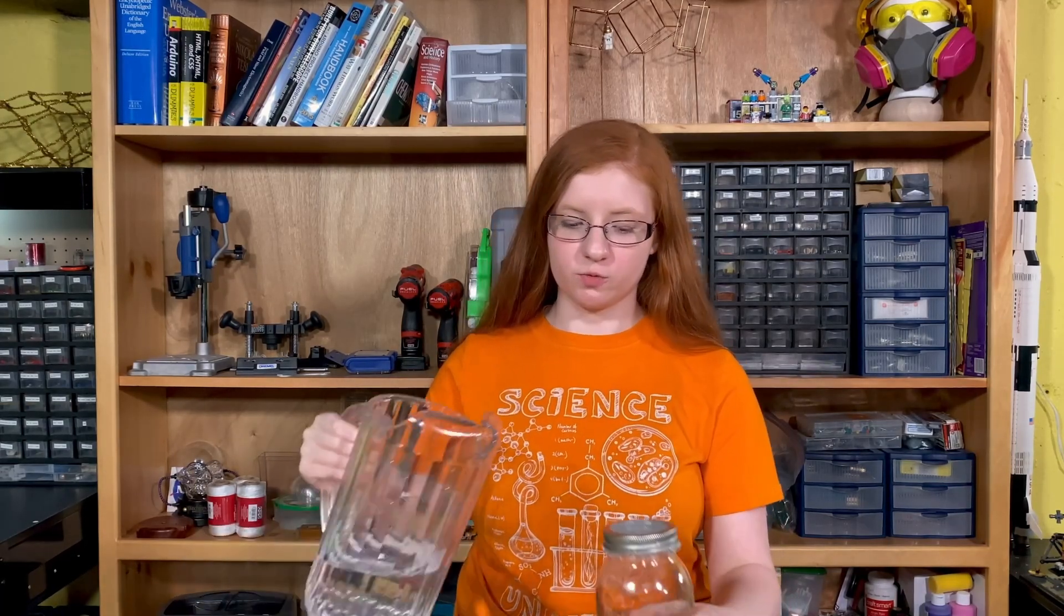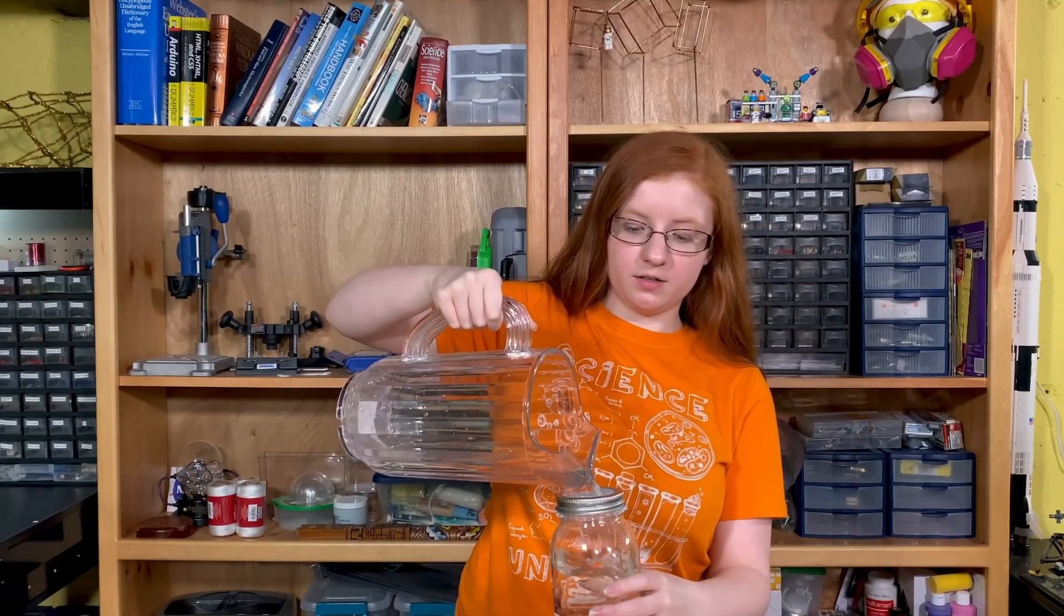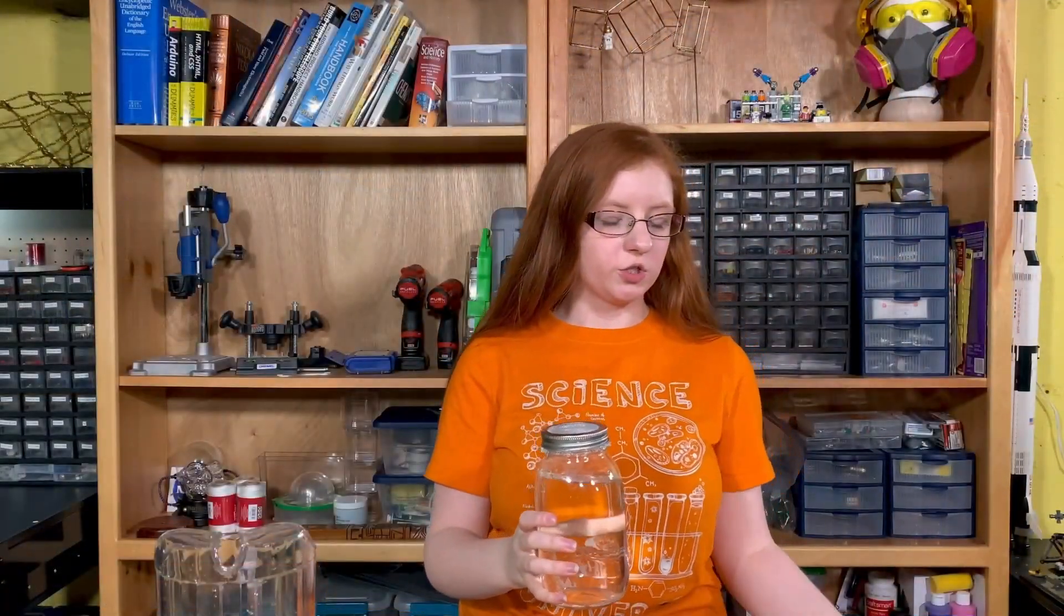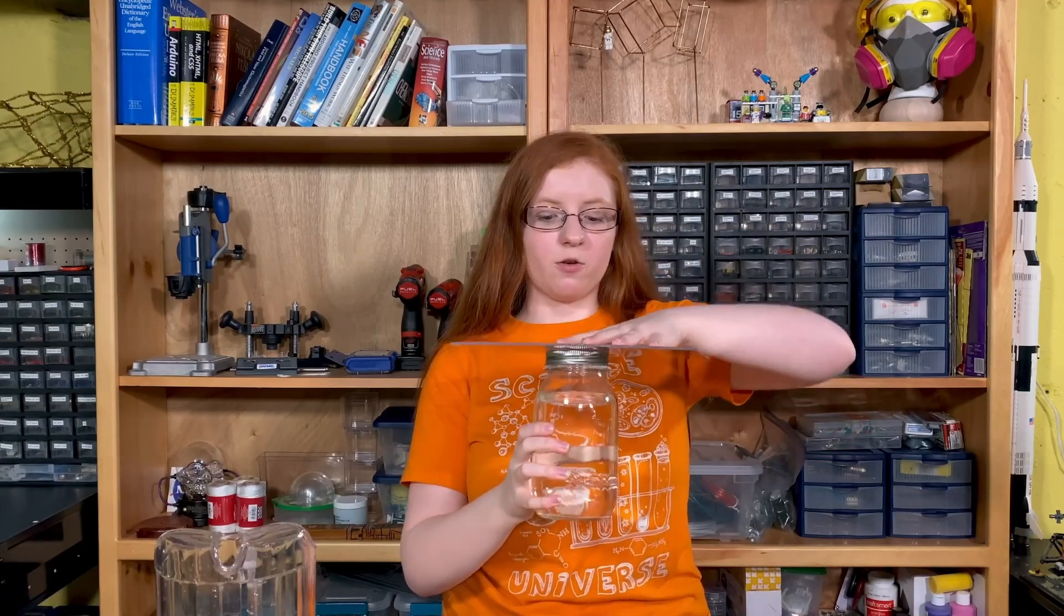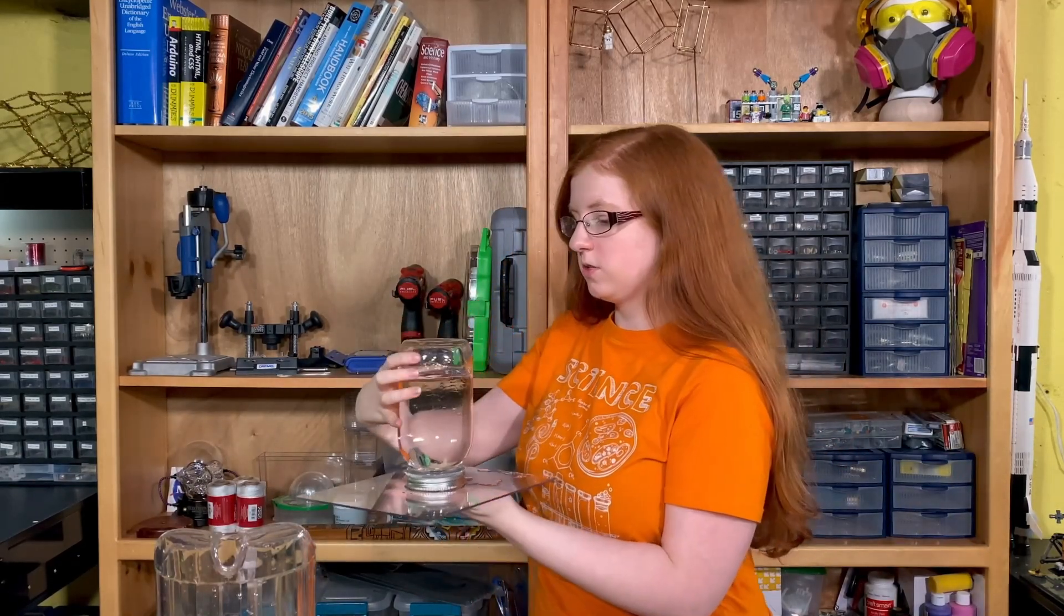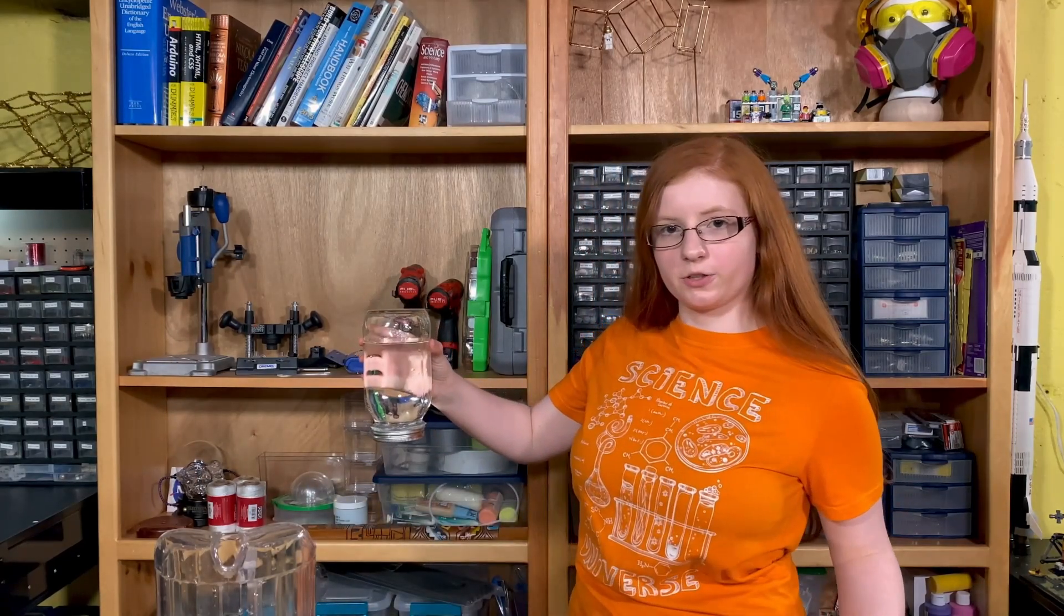First off is adhesion, which is water's ability to stick to other materials, like you see here at the top of the mesh on the jar. The second property is cohesion, which is water's ability to stick to itself. And this is the most important one, so let's get a closer look.